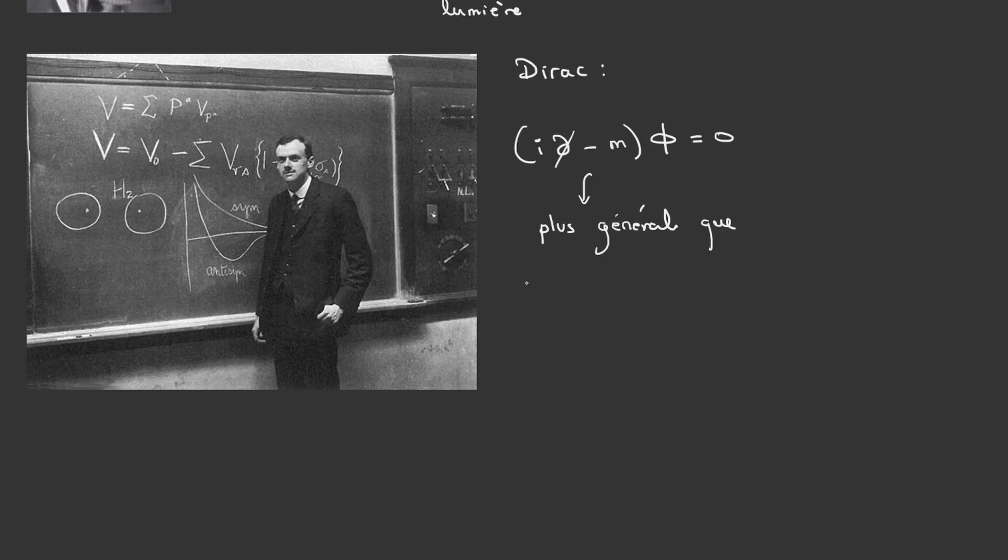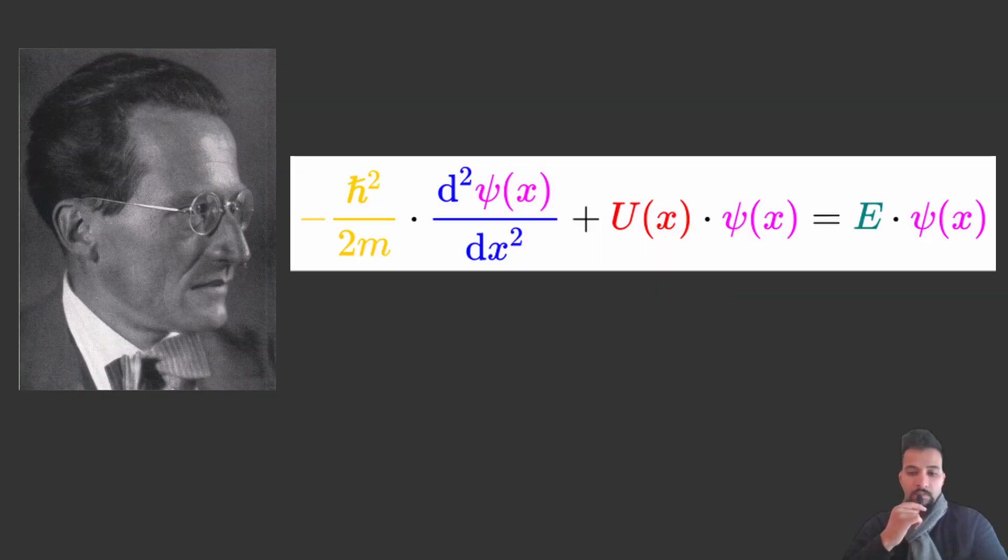In many quantum mechanics textbooks or online courses, the Schrödinger equation is often presented without proof as a fundamental assumption. Some teachers claim it cannot be rigorously demonstrated,